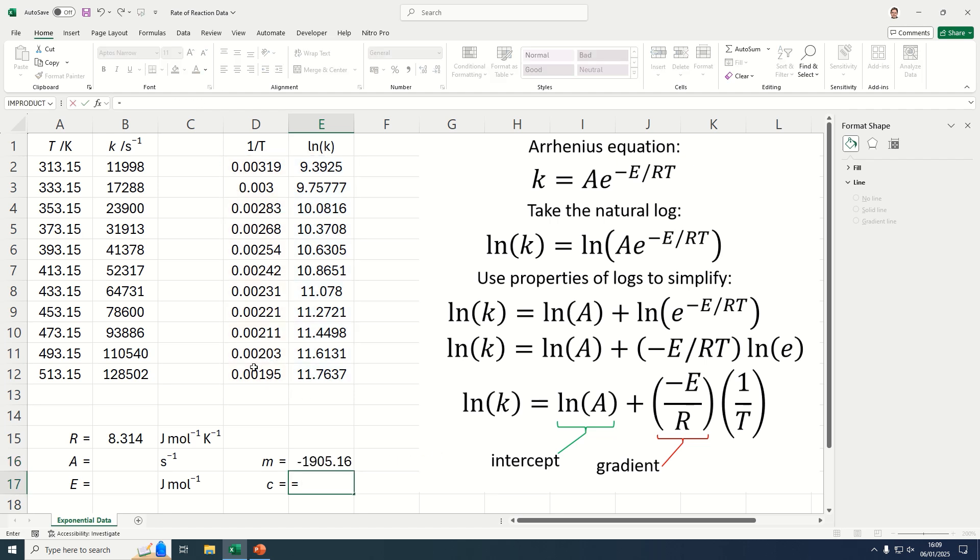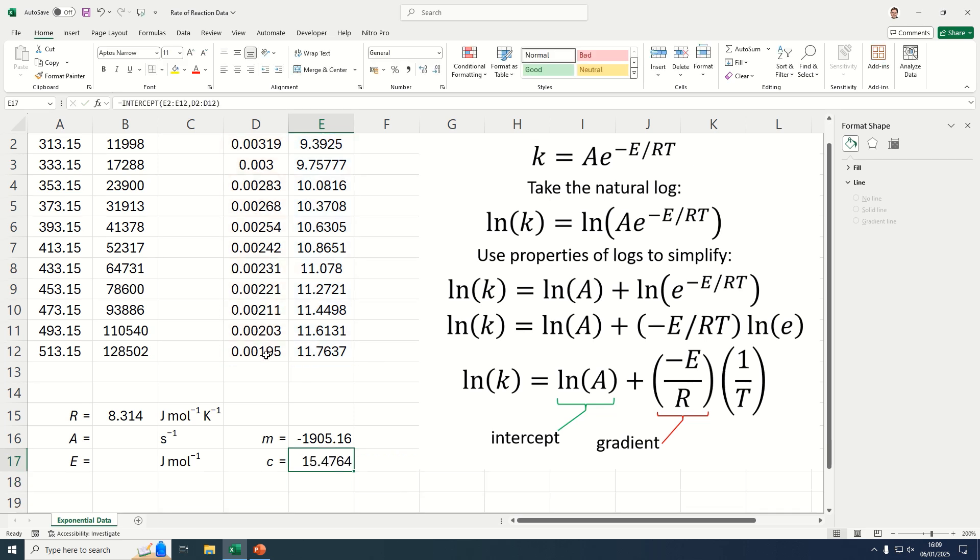And then we can also use INTERCEPT to get the C value. So y values, comma, x values, close the brackets, and there we have it.